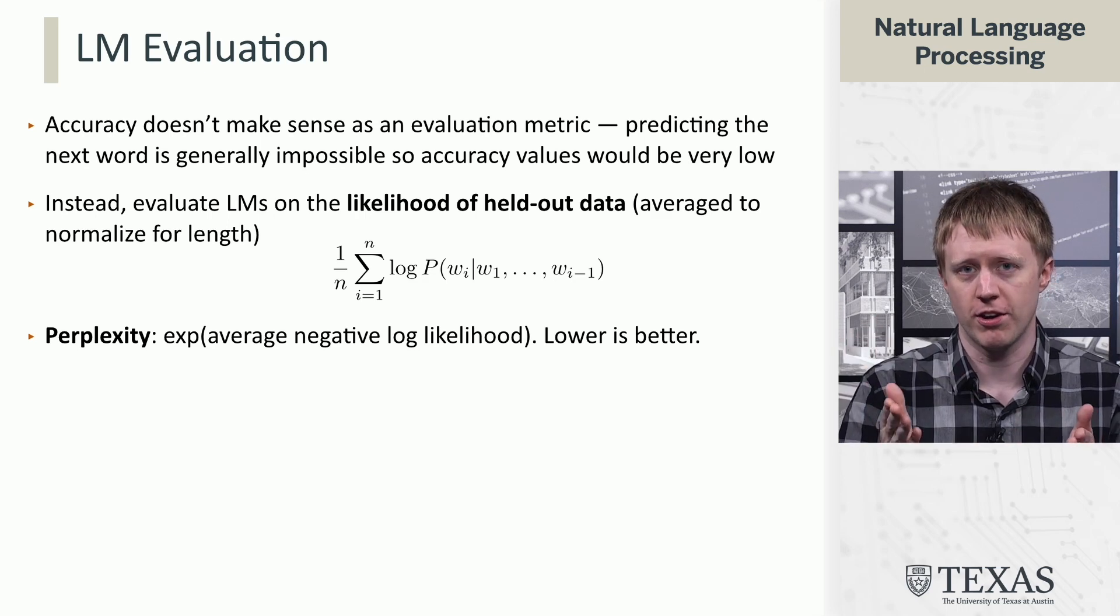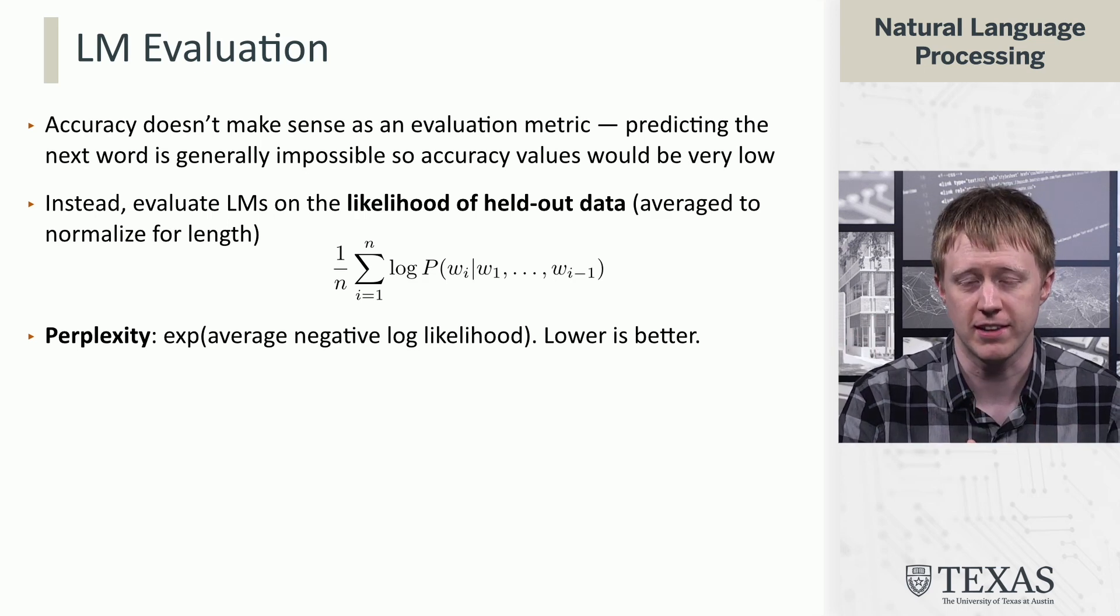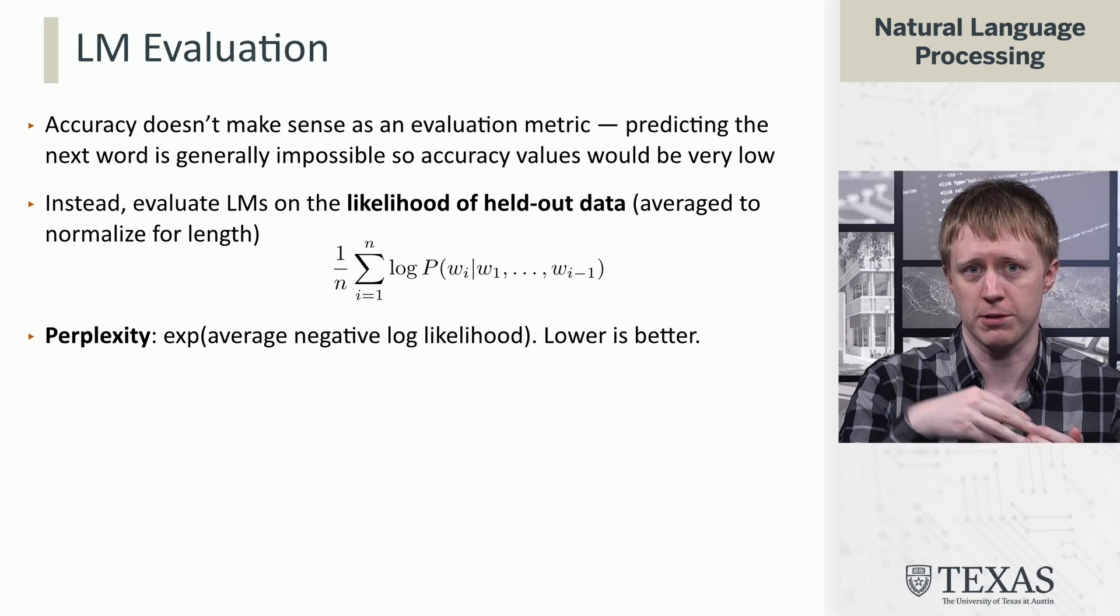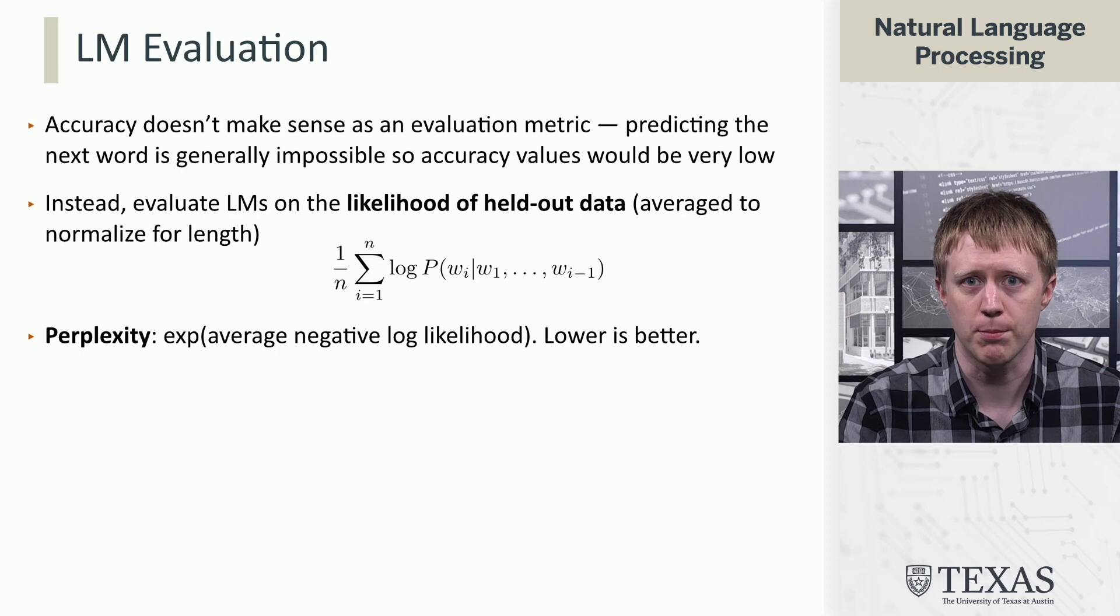So if we think about log likelihoods, they're often like minus 2, minus 3, things like that. So negative log likelihood is going to be a positive number. Then when we exponentiate that, we're going to get a higher positive number.